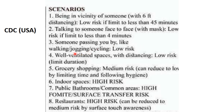Someone passing you by walking, jogging, or cycling is a very low risk. Well-ventilated spaces with distancing are very low risk, but don't linger too long. Grocery shopping is a medium risk — you can reduce it by limiting time and following hygiene. Hygiene is more important than wearing gloves. Clean the shopping trolley, be careful about not touching your eyes. All indoor settings are very high risk. Public bathrooms and common areas are very high risk due to fomite transfer. Restaurants are very high risk because you can't eat with your mask on.